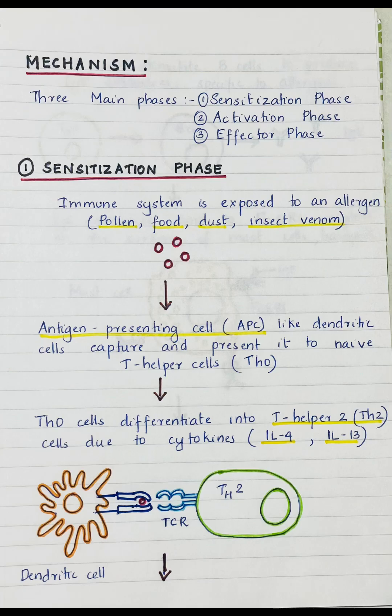The mechanism of type 1 hypersensitivity reaction occurs in three main phases: the sensitization phase, the activation phase, and the effector phase. The sensitization phase is where our immune system is first exposed to the allergen. Re-exposure to the allergen occurs in the activation phase. The effector phase is the allergic reaction itself.